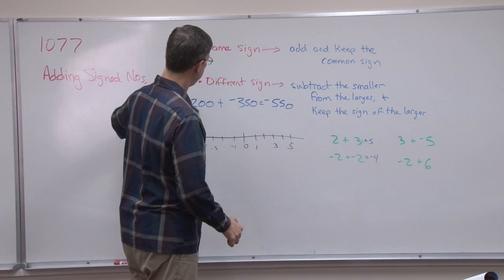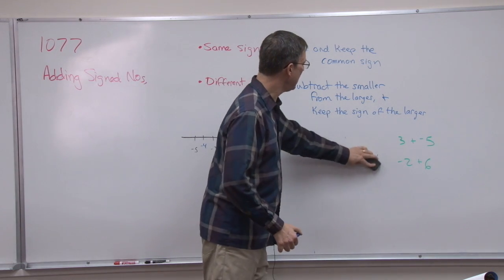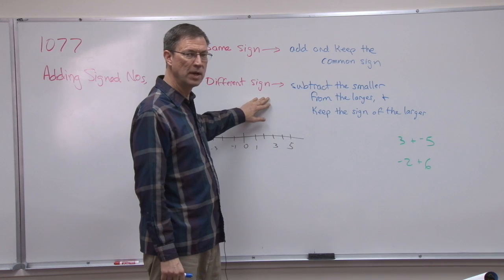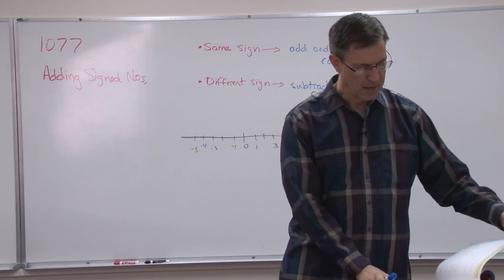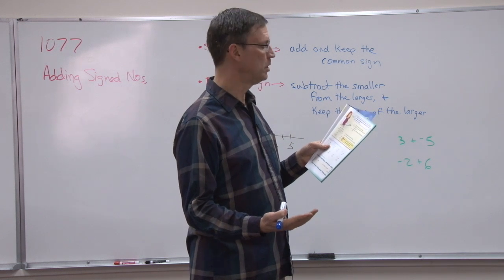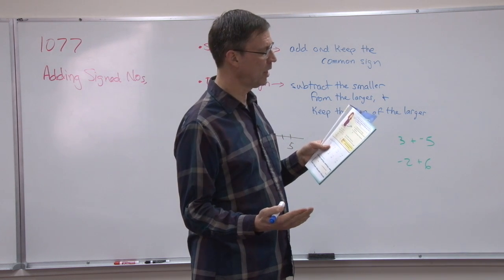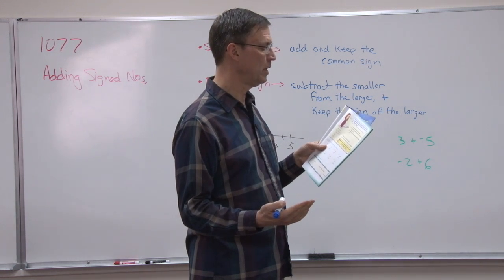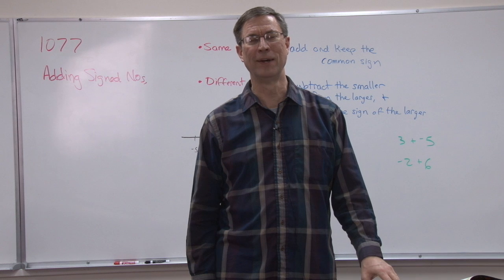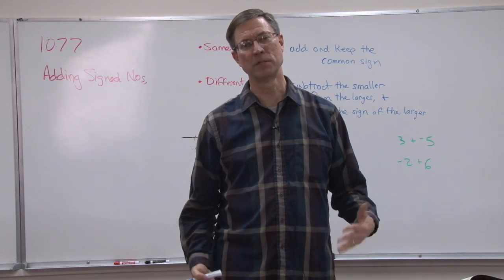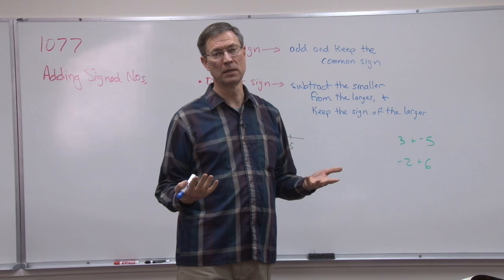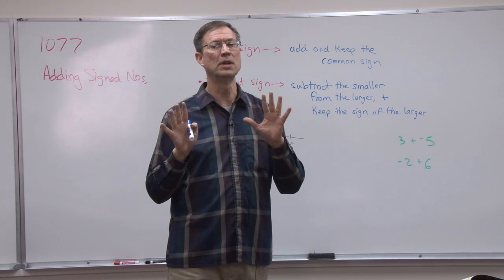Now the more challenging rule: adding when the signs are different — one number is positive and one is negative, which is covered on page six. The PACE has a three-step process: find the absolute value of each integer, subtract the smaller absolute value from the larger, then attach the sign of the integer with the larger absolute value. You read that and think, what are we talking about? Integer just means a positive or negative number; absolute value means the value without a positive or negative sign. Let's make it as simple as possible.